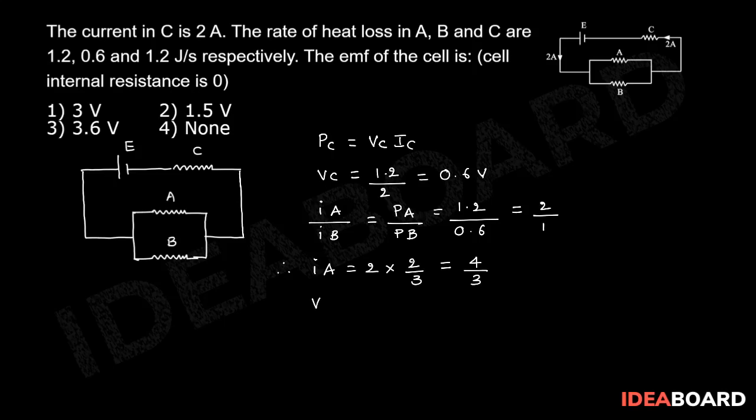That implies Va is equal to Pa by Ia. Since Pa is 1.2 and Ia value is 4 by 3, that is equal to 0.9 volt.